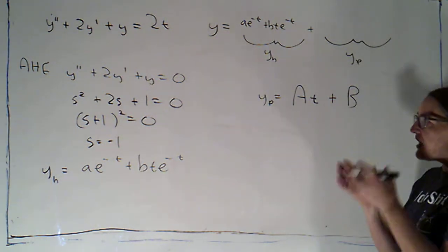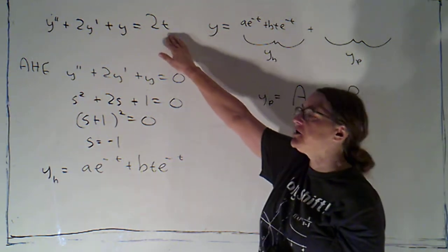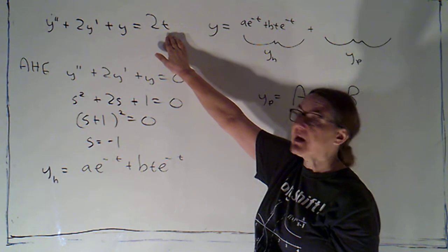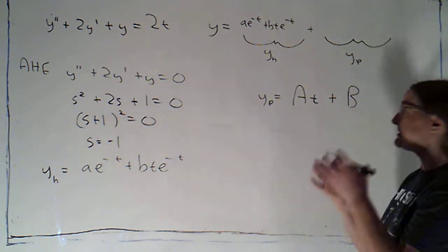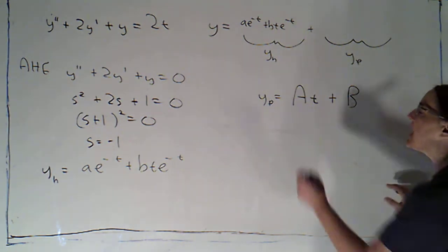I'm not just going to guess the terms that happen to show up. I'm going to guess an arbitrary polynomial of the same degree. So if this had been 2t squared, I would have guessed some t squareds plus some t's plus a constant. Okay. Alright.